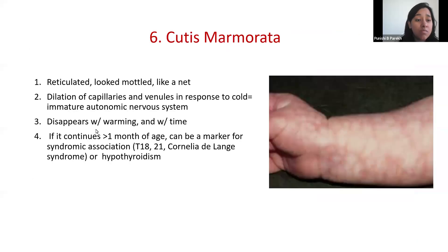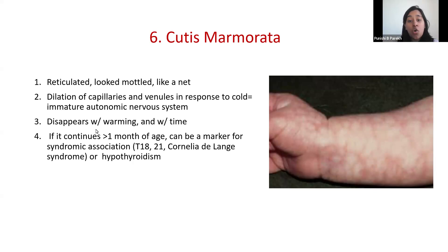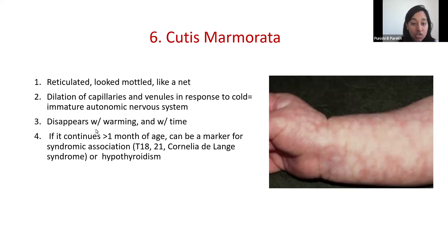Cutis marmorata presents as a reticulated, mottled, net-appearing skin pattern. It occurs because of dilatation of capillaries and venules in response to cold, signifying an underlying immature autonomic nervous system, which is very common in newborns. Another common manifestation is acrocyanosis — cyanosis of the limbs — caused by the same reason. Both lesions disappear within the first few weeks of life as the newborn matures, and resolve with warming. If these lesions appear beyond one month of age, it could be a marker for associated syndromes or hypothyroidism and may warrant investigation.